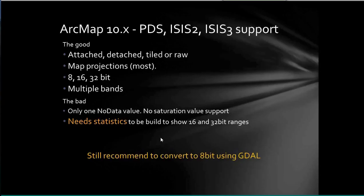One projection not well supported in ArcMap is oblique cylindrical with a rotation. Cassini data is released in that projection and doesn't work in ArcMap — you'll have to reproject it before using Cassini data. 16-bit and 32-bit are supported; if ISIS supported 64-bit, it would work too.